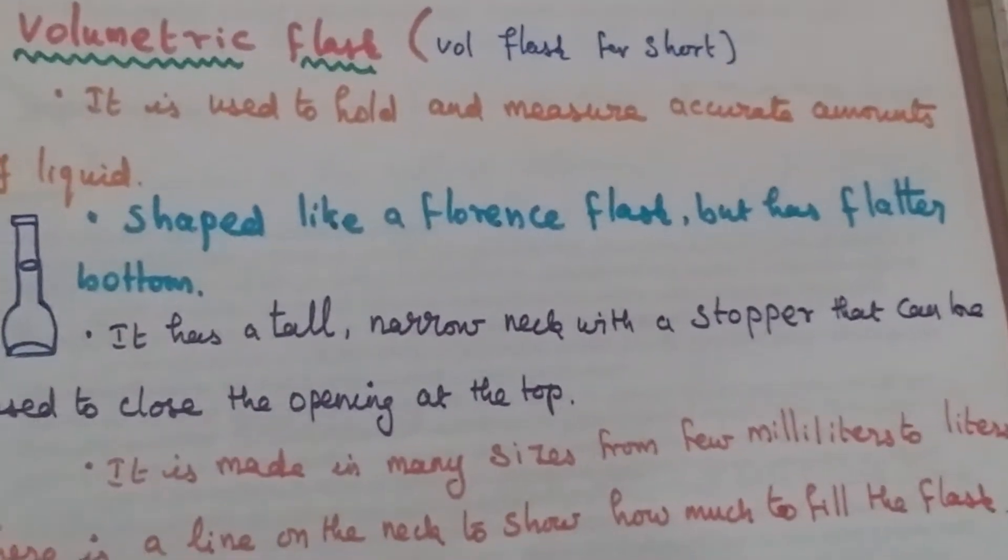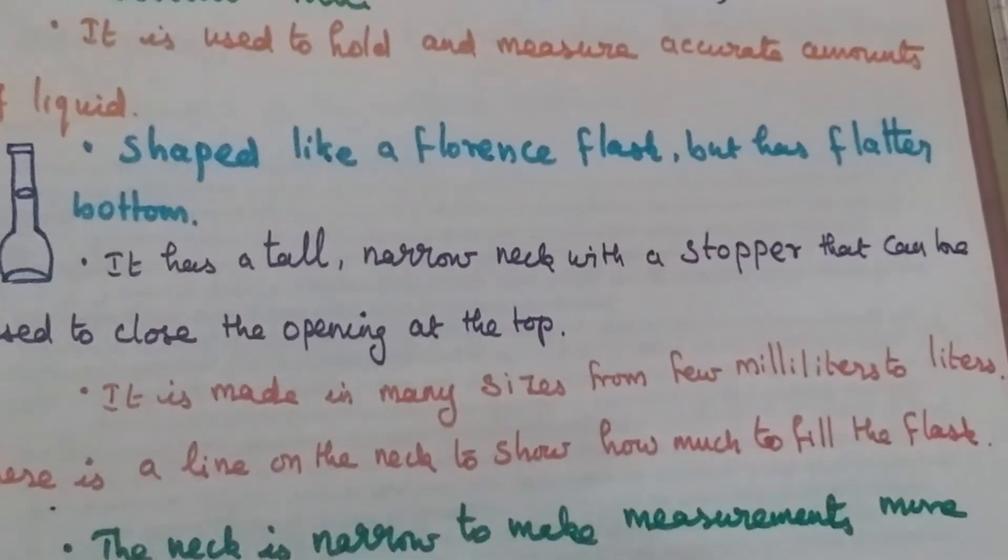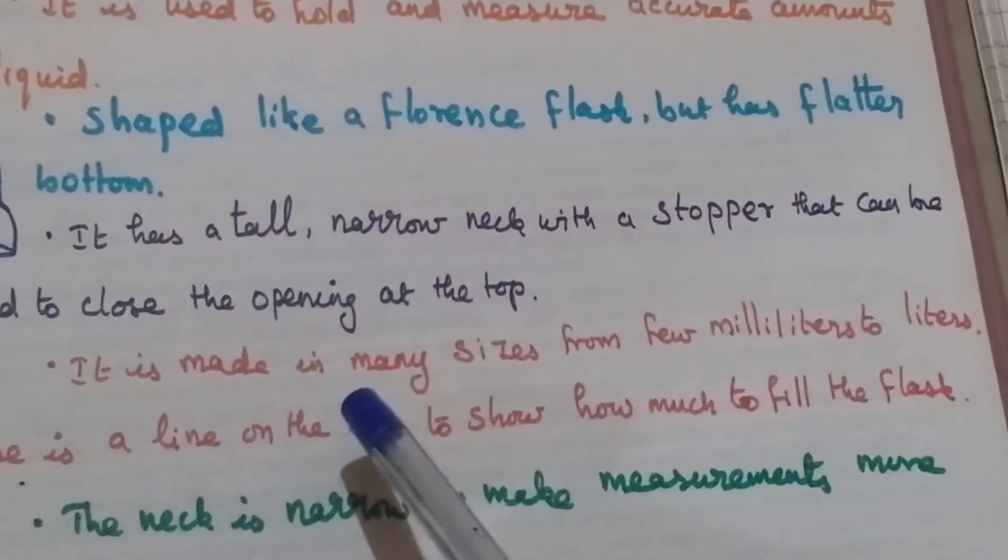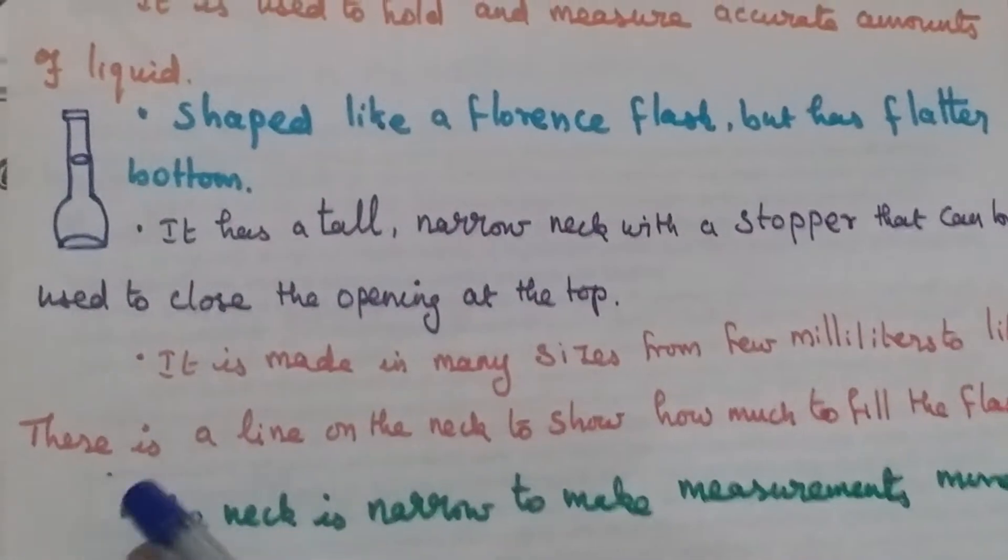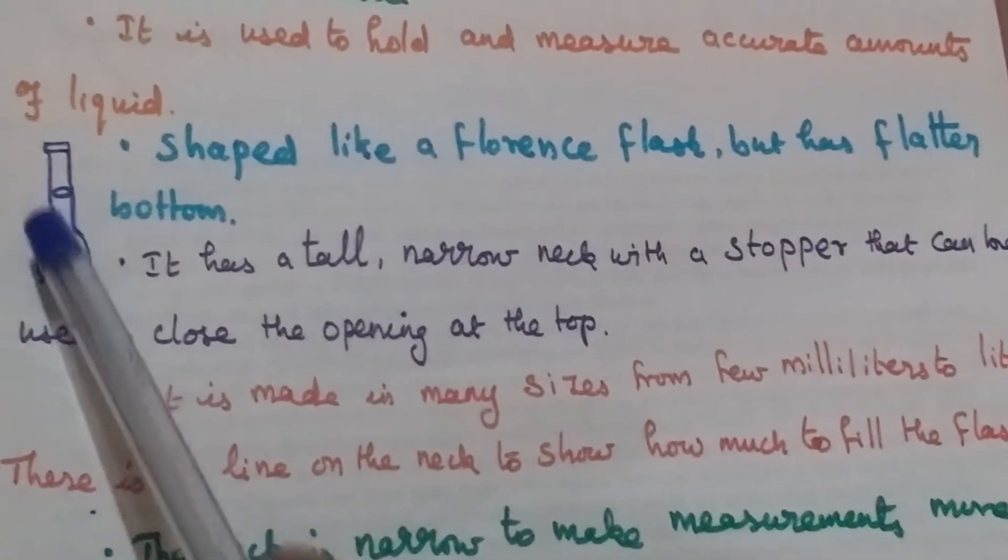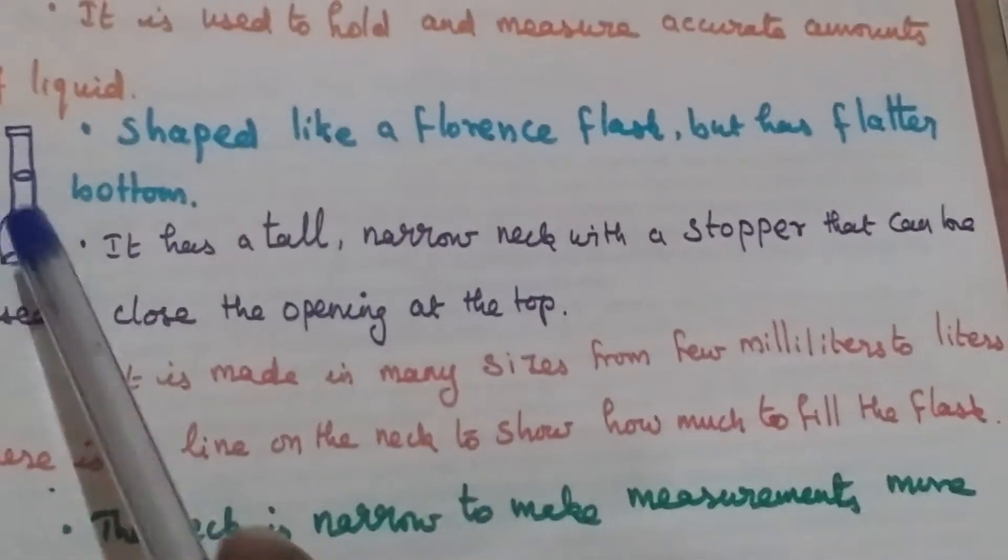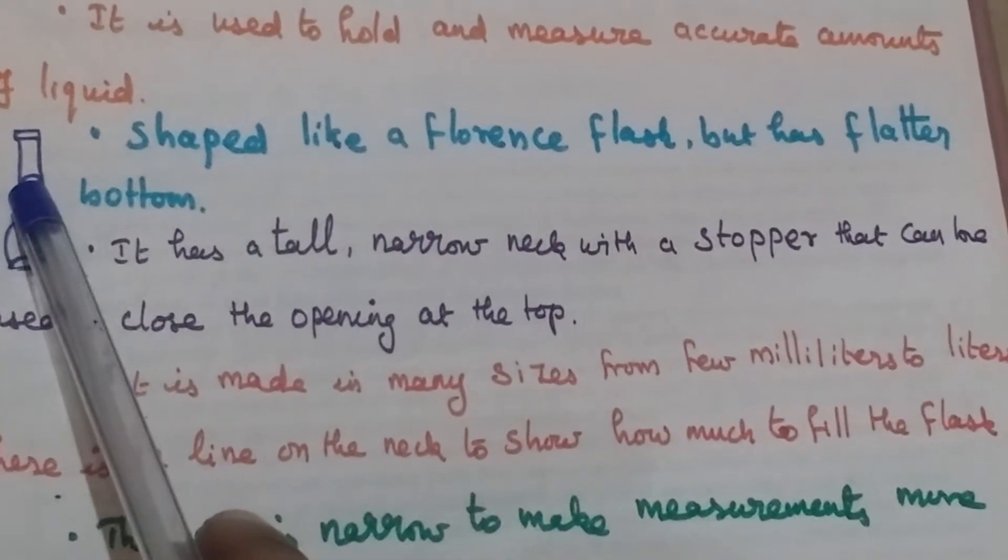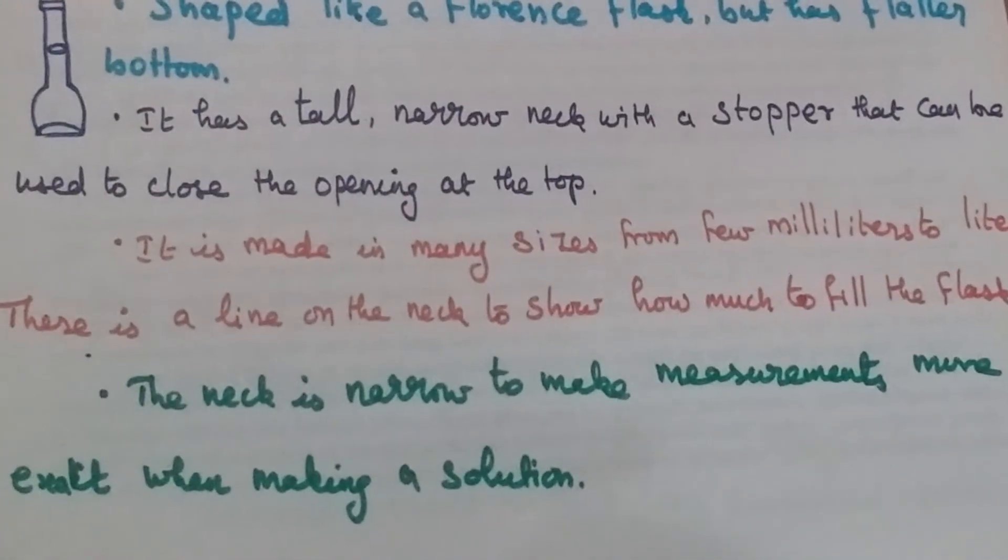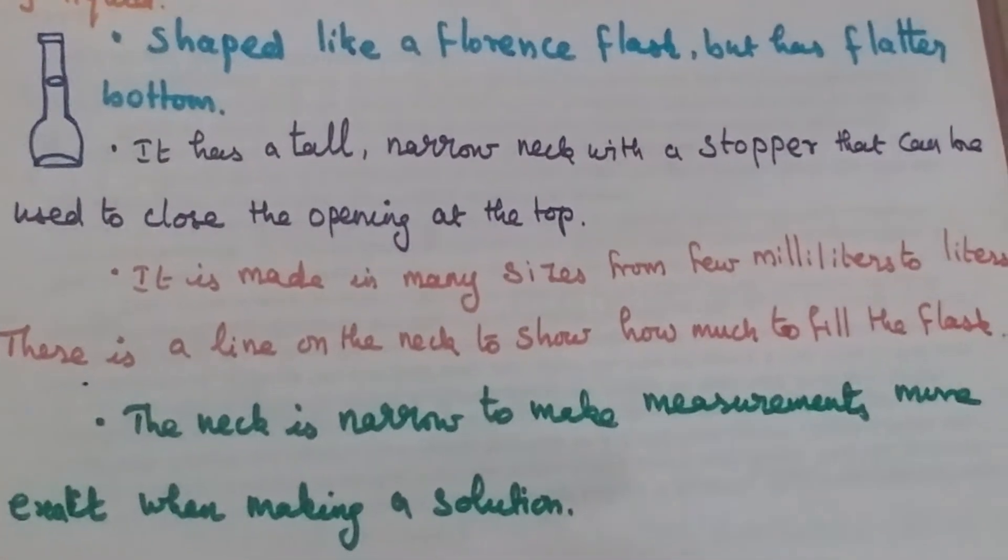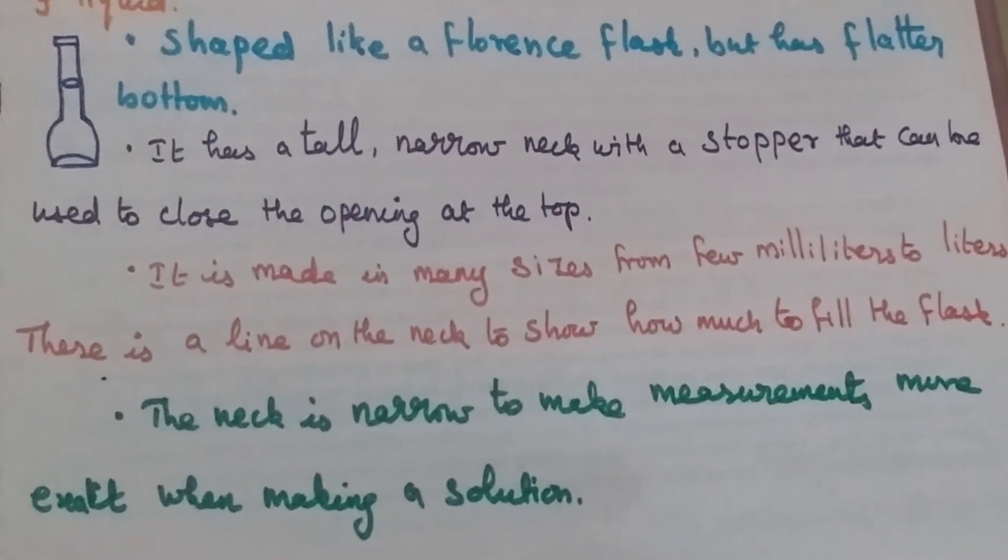It is made in many sizes, from a few milliliters to liters. There is a line on the neck to show how much to fill the flask. The neck is narrow to make measurement more exact when making a solution.